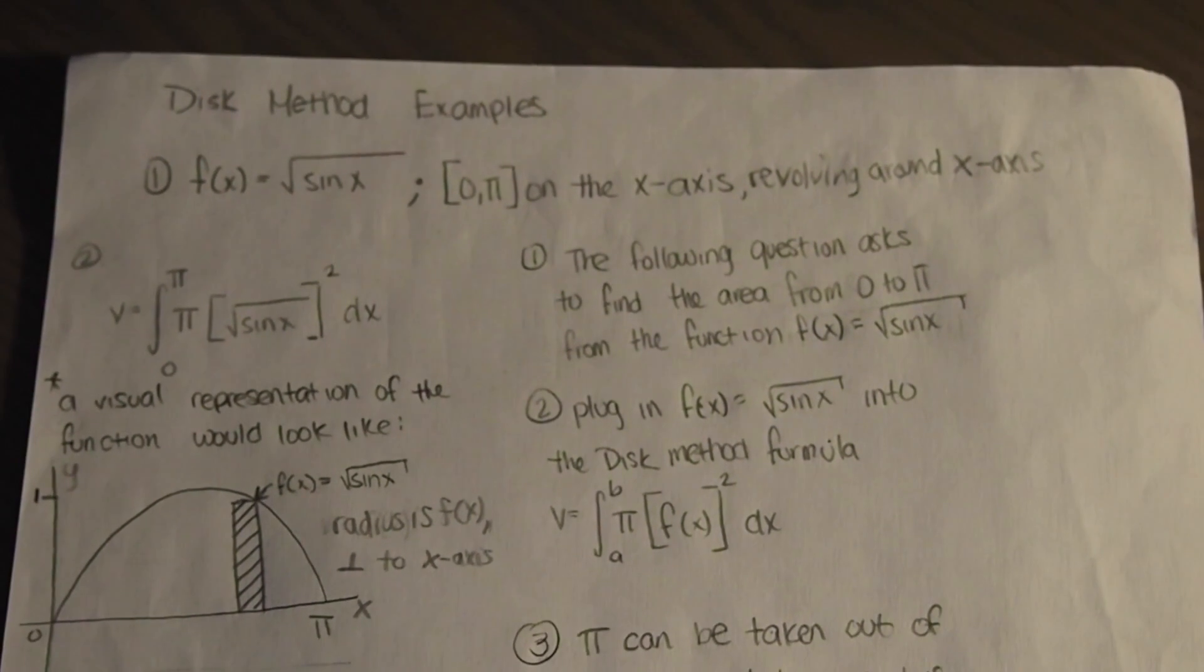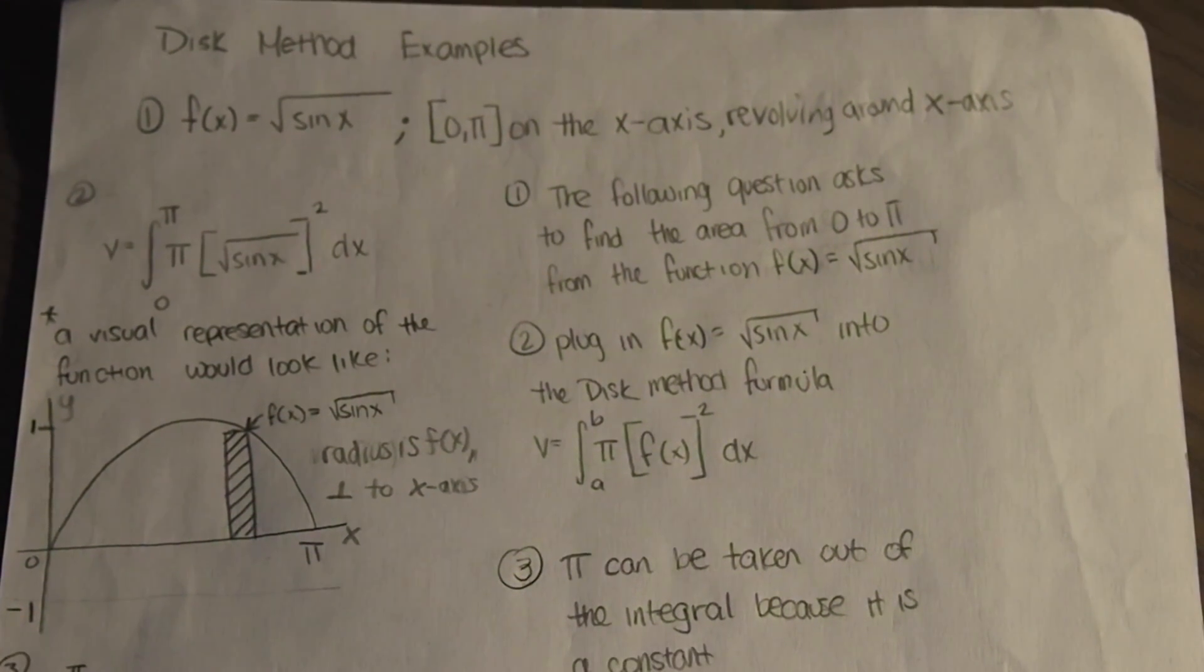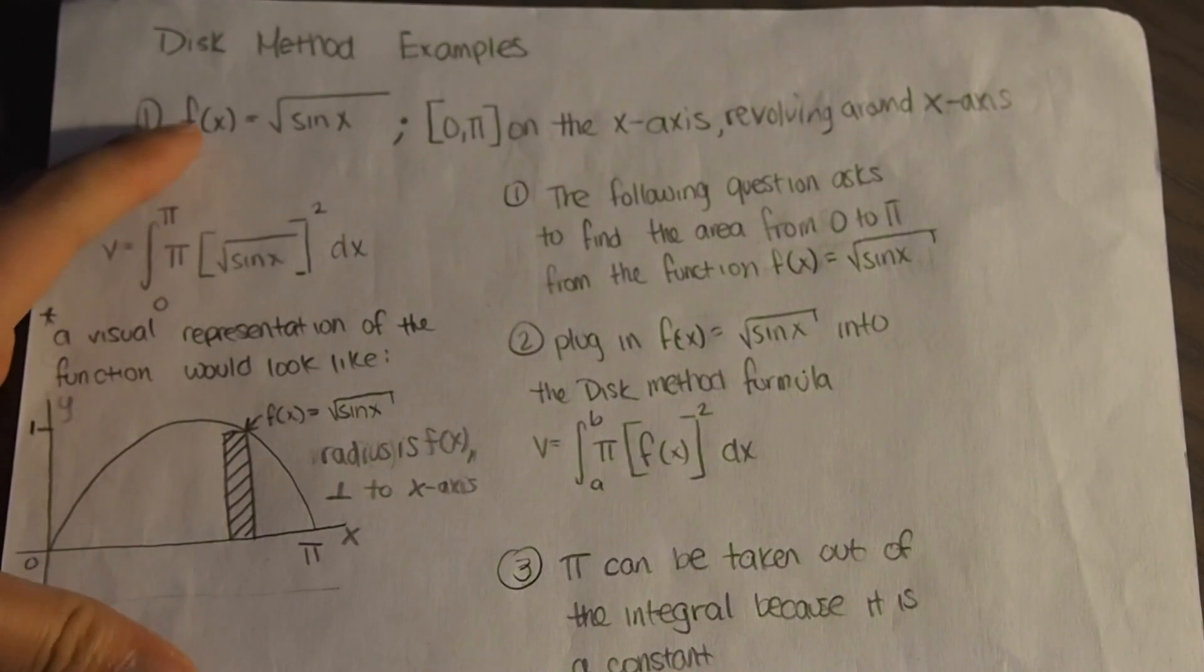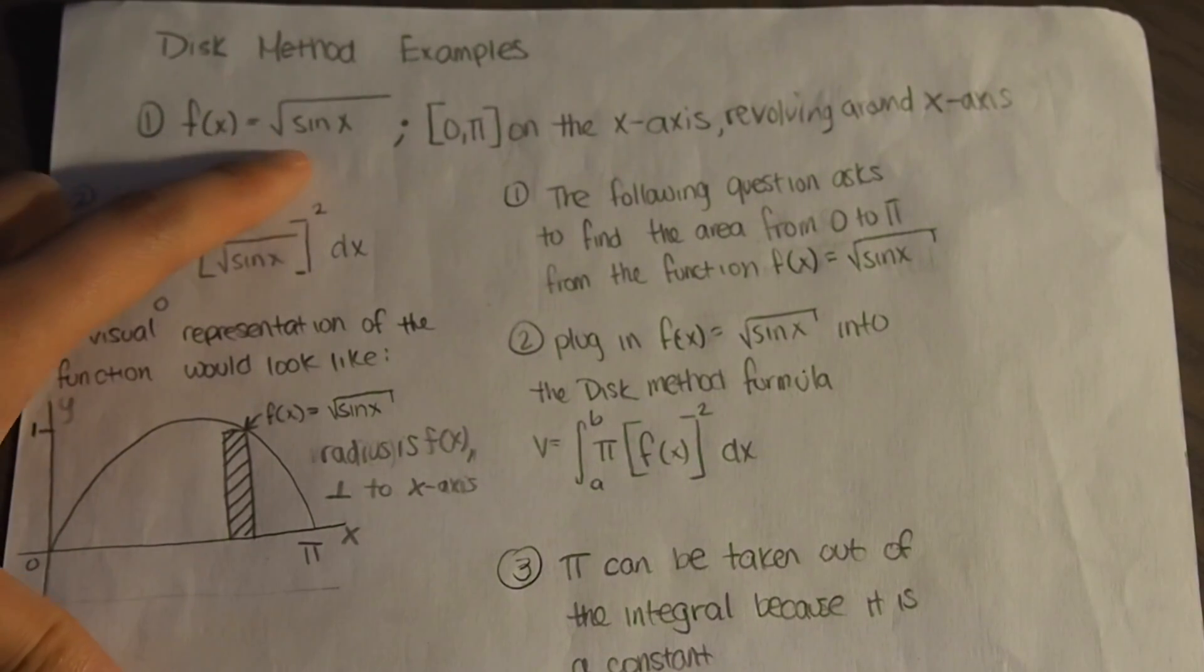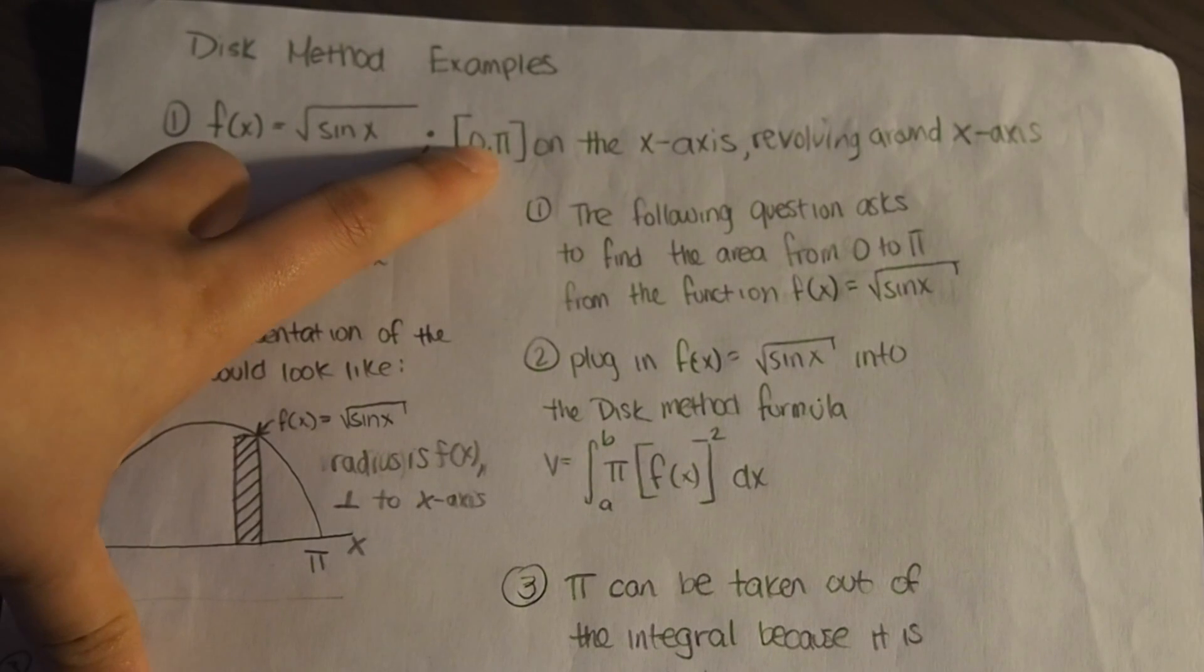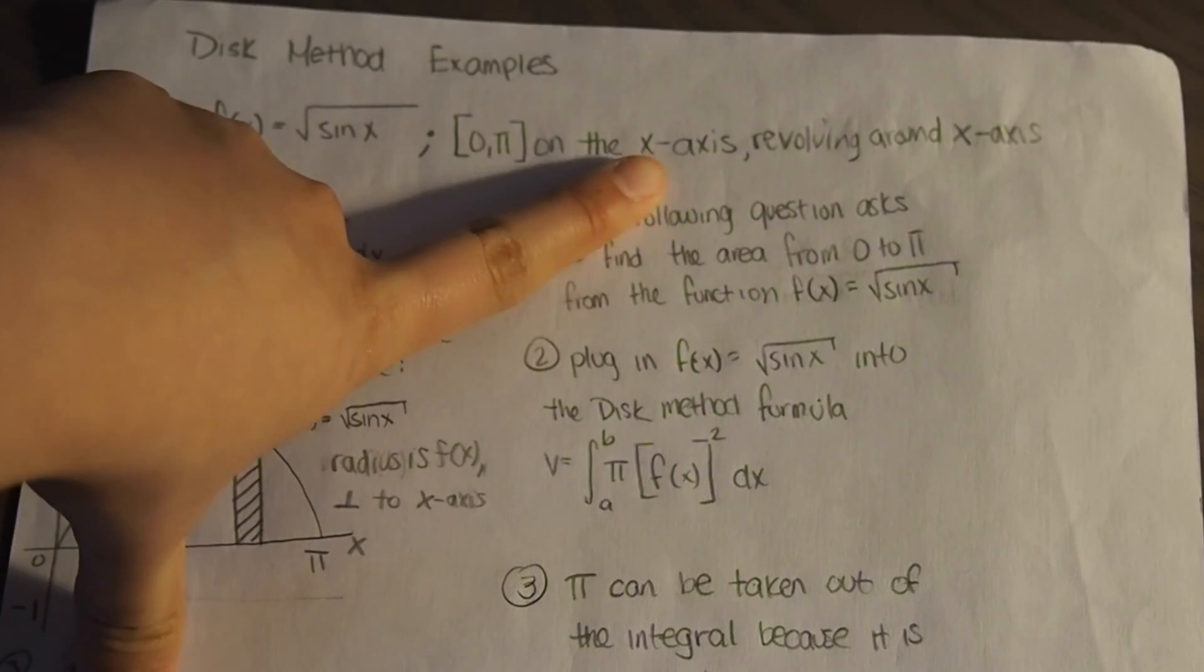I'll be showing you how to do the disk method with trying to find a volume revolving around the x-axis. So given we have the function f(x) equals square root of sin x, and 0 to π are bounds on the x-axis.